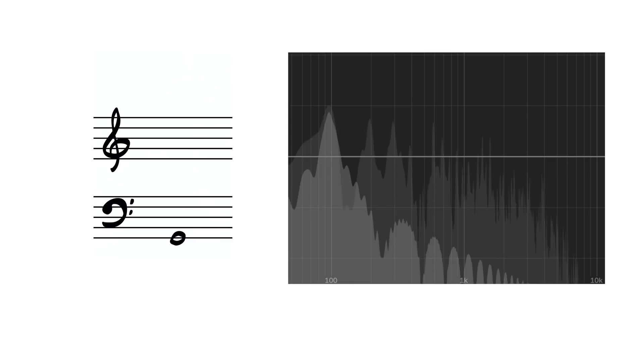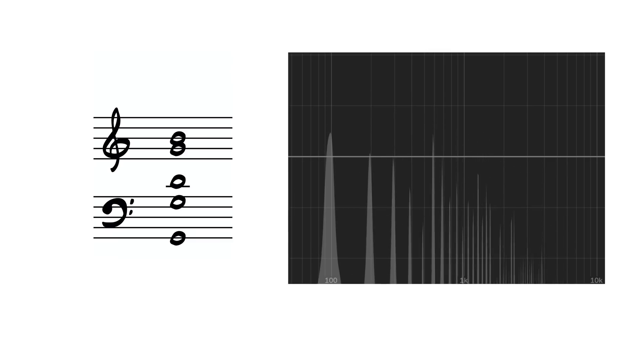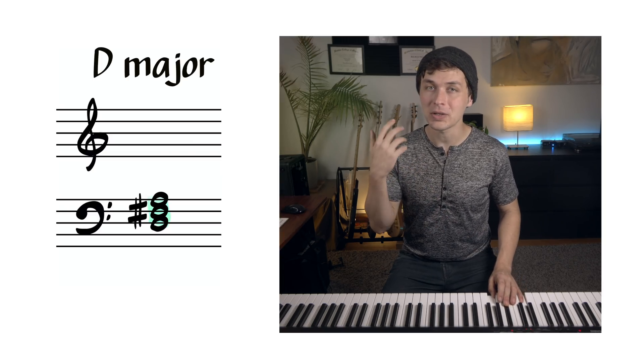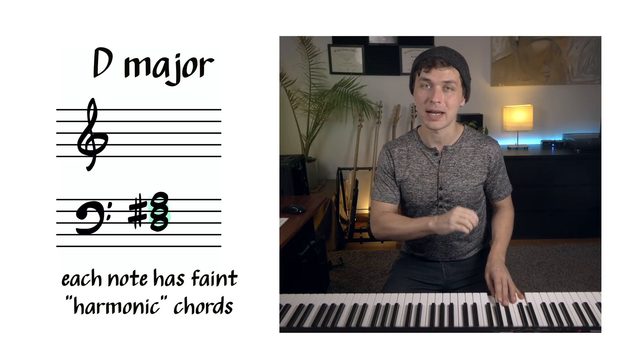The first five harmonics give us essentially a major triad, which tells us that alongside pretty much every note that we hear, we're hearing a faint additional major chord. It's built into the very physics of music making. If we play a D-major chord, D, F-sharp, and A, we're actually hearing three additional faint major chords alongside this one, each built from one of these notes.